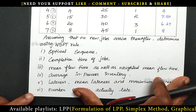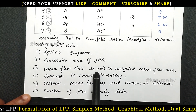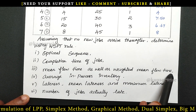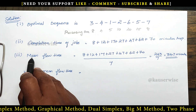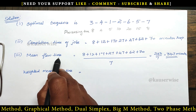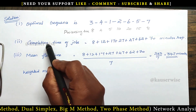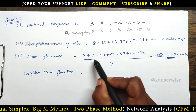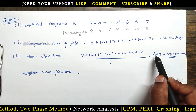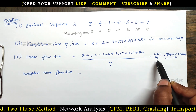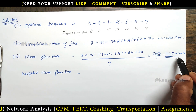The third calculation is mean flow time as well as weighted mean flow time. For mean flow time, just take the total of completion times of each job and divide by the number of jobs. So 243 divided by 7 equals 34.7 minutes, which is the mean flow time.